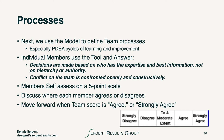Last, we move on to processes, and we ask especially for the PDSA cycles that the team needs to run in order to learn and improve. We ask these questions about decisions and conflict. The statements to score, on the scale of strongly disagree to strongly agree, are: decisions are made based on who has the expertise and the best information, not on hierarchy or authority; and conflict on the team is confronted openly and constructively. After every individual self-assesses, we have a discussion, and when the team score is agree or strongly agree, we move forward.